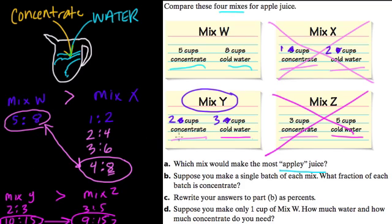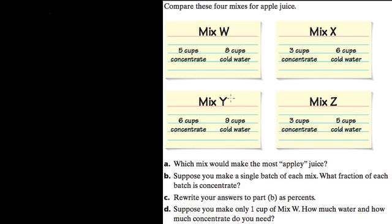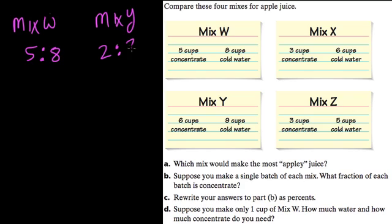Now it's just a case of comparing mix W with mix Y. So mix W is 5 to 8 and mix Y is 2 to 3. I'm going to keep scaling these up until I have the same number of cups of concentrate, not water.